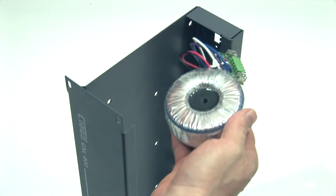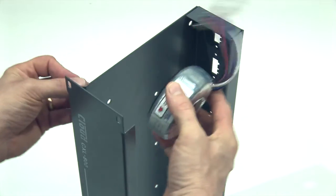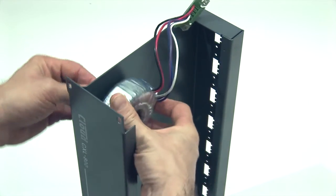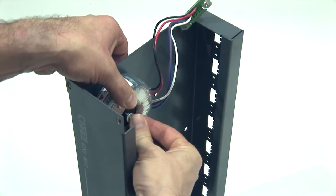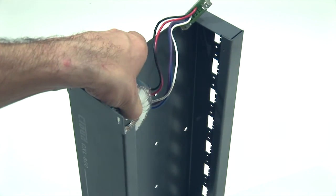To install, place the transformer on the housing which is in line with the output connector you wish to use. Fix the transformer to the chassis using the bolt, washer and nut provided.